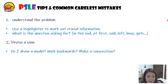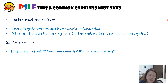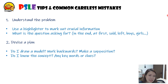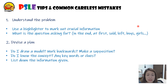Number two: devise a plan. Think about it — is it a model question? Can you solve it using a model? Do you draw, or is it working backwards? Do you make a supposition or assumption? Try to recognize the question — do you know the concept? Does it look familiar? Any keywords or clues like 'more than' or 'three times'? Look out for these and highlight them. Also, list down the information given — for example, if they give you a ratio, write down the ratios.